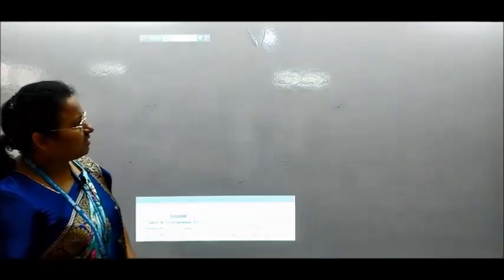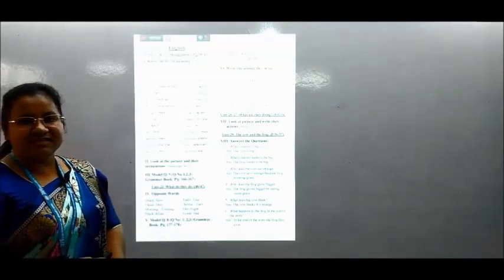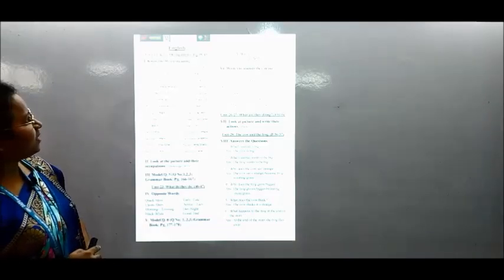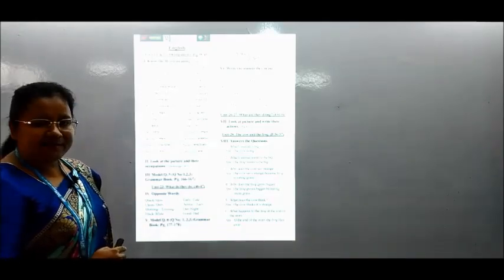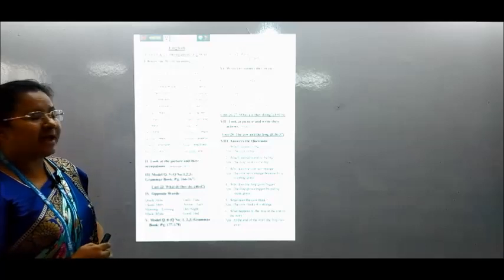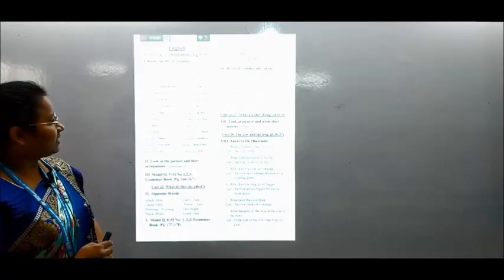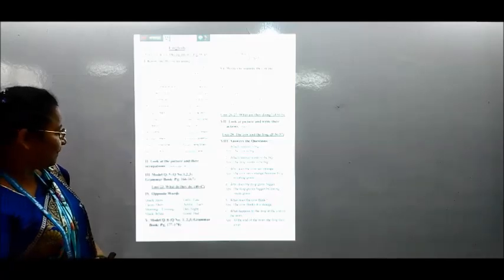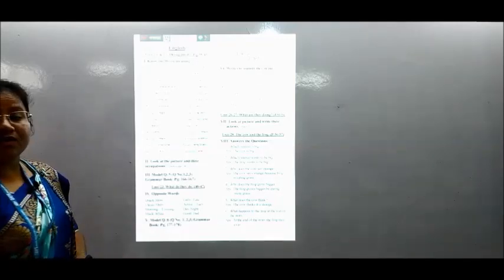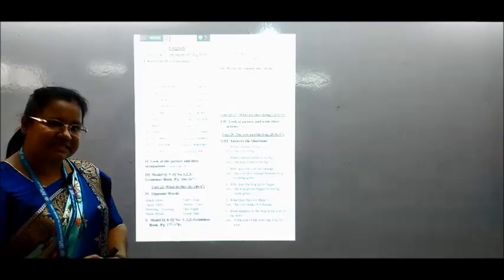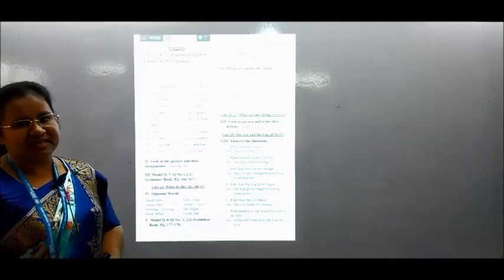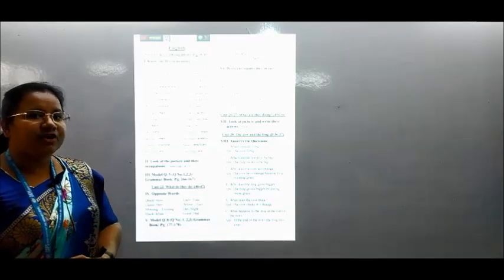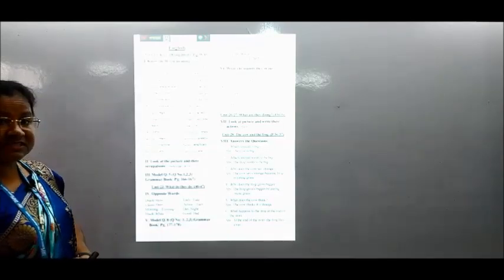Let's see the whole notes which is given to you. You can follow these notes. Number one is given: word meaning. You need to memorize this word meaning for the detailed notes. Number two is given: look at the picture and write their occupations. We already discussed in the first class about occupations. I will give the picture and you have to write the occupations name.